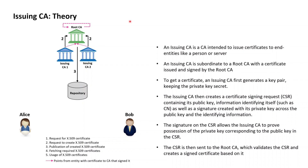This signature is proof from the issuing CA to the root CA that the issuing CA indeed knows the private key corresponding to the public key that should be certified, assuring the root CA that the issuing CA is not trying to get a certificate for a public key owned by someone else. This CSR is then sent to the root CA, which validates it and creates a signed certificate based on it.